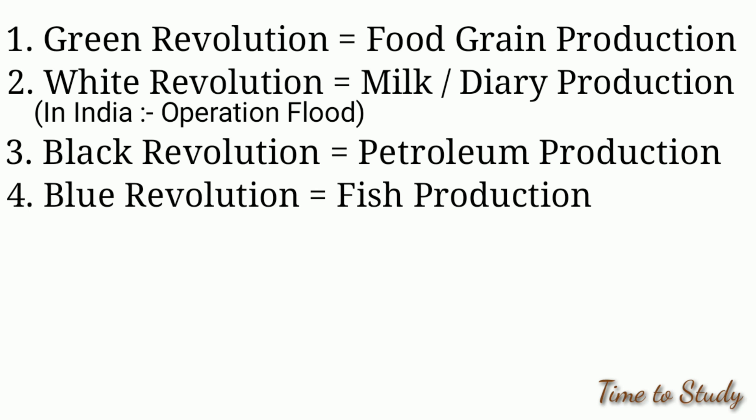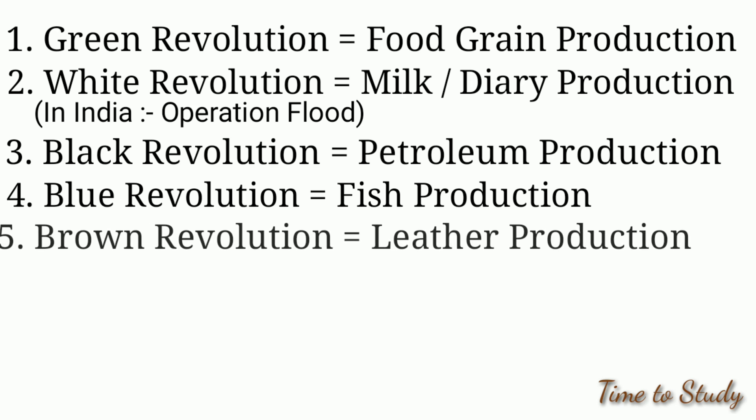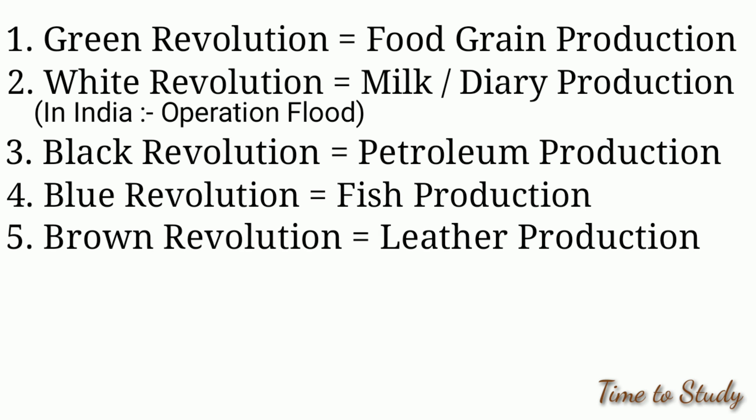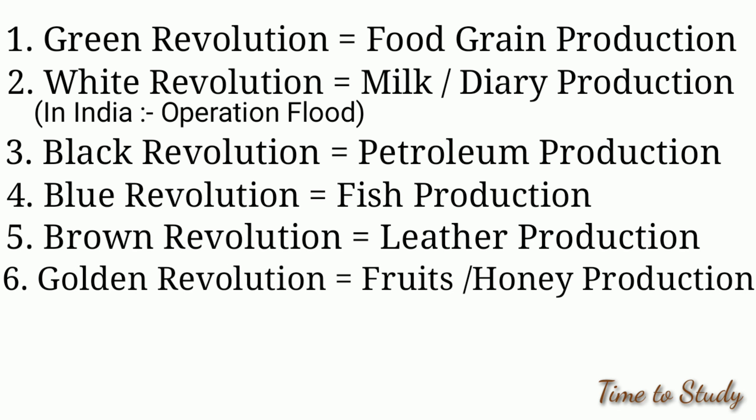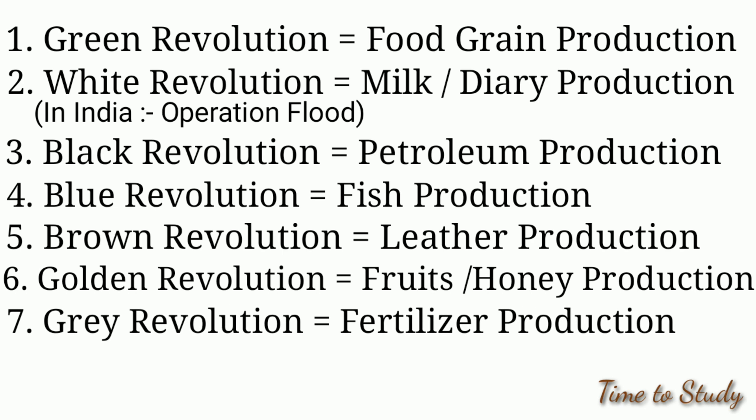Blue revolution is related to fish production. Brown revolution is related to leather production. Golden revolution is related to fruit and honey production. Green revolution is related to fertilizer production.